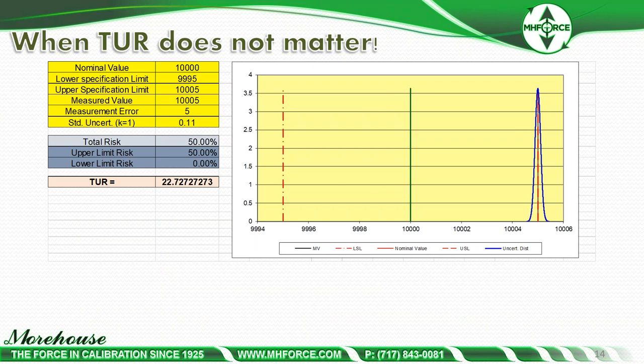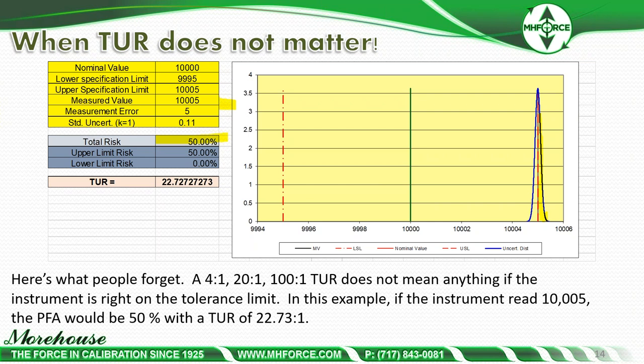TUR does not matter when you're on the tolerance limit. If our measured value is 10,005 — right on that specification limit — no matter what lab performs the calibration, at least 50% of the curve will hang outside, and the risk will be at least 50%. You have a 50% chance of the measurement being in-tolerance and 50% out-of-tolerance. It doesn't matter if you have a 4-to-1, 20-to-1, or 100-to-1 TUR when you're at the edge of the tolerance limit.